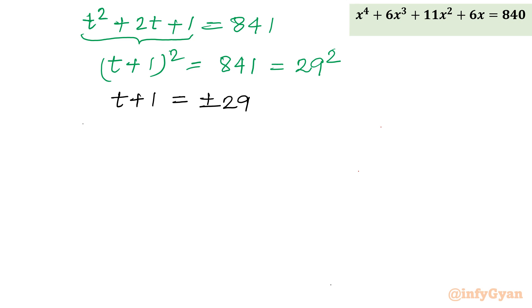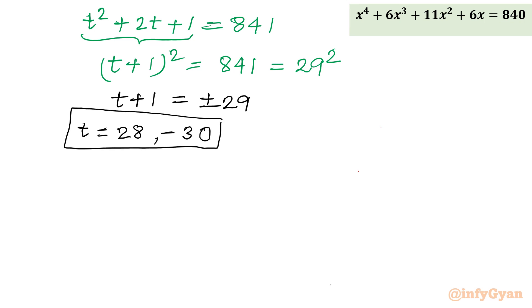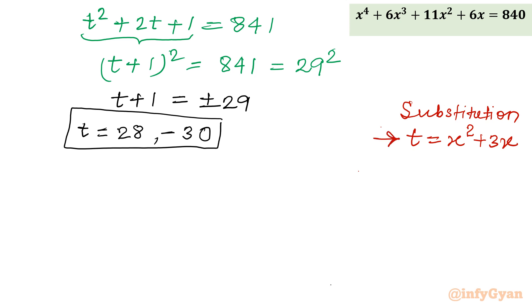So if I consider the positive sign, then t = 28. If I consider the negative sign, then t = −30. Now remembering our substitution, t = x² + 3x, I will now put in each value, giving two quadratic equations: x² + 3x = 28, and x² + 3x = −30.